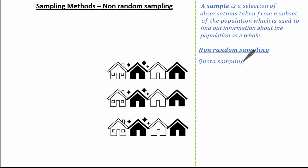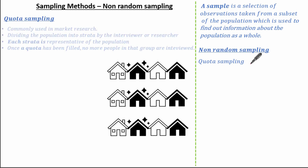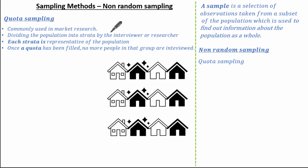The first non-random sampling method we're going to look at is quota sampling. Quota sampling is commonly used in market research. It focuses on dividing the population into strata groups by the interviewer or researcher, and each group or strata is representative of the population. Once a quota has been filled, no more people in that group are interviewed.